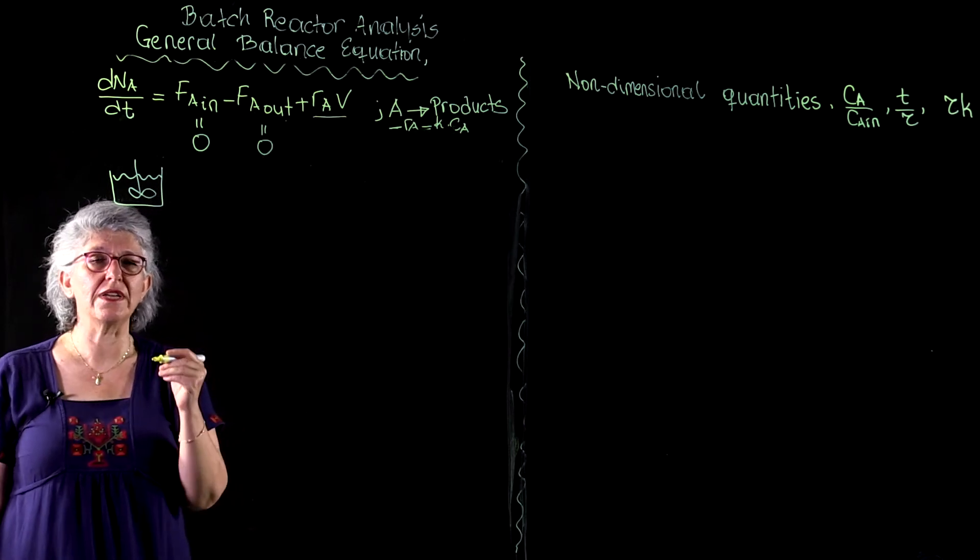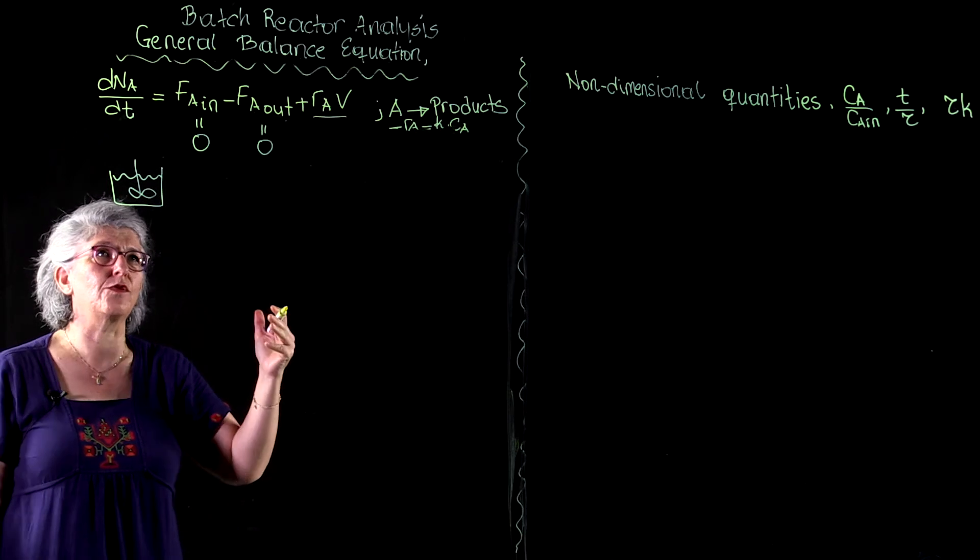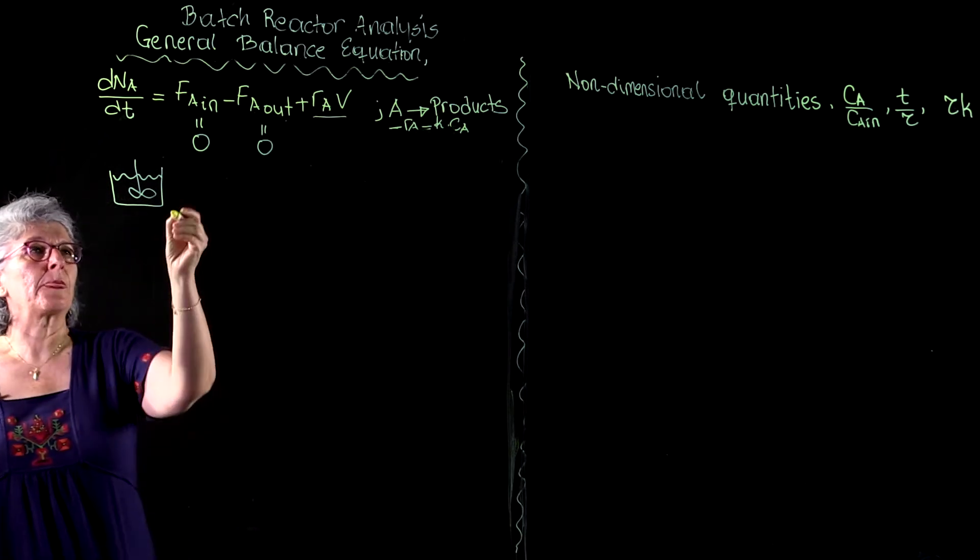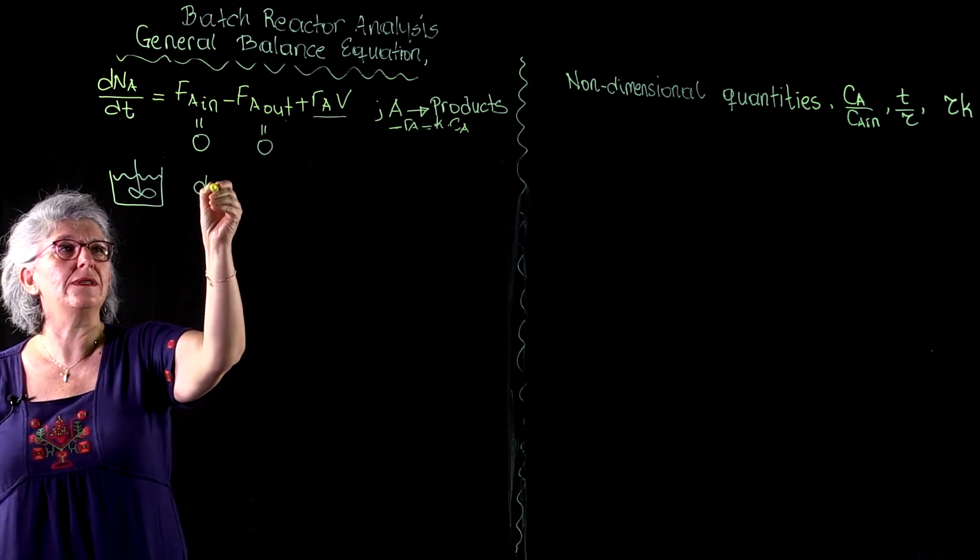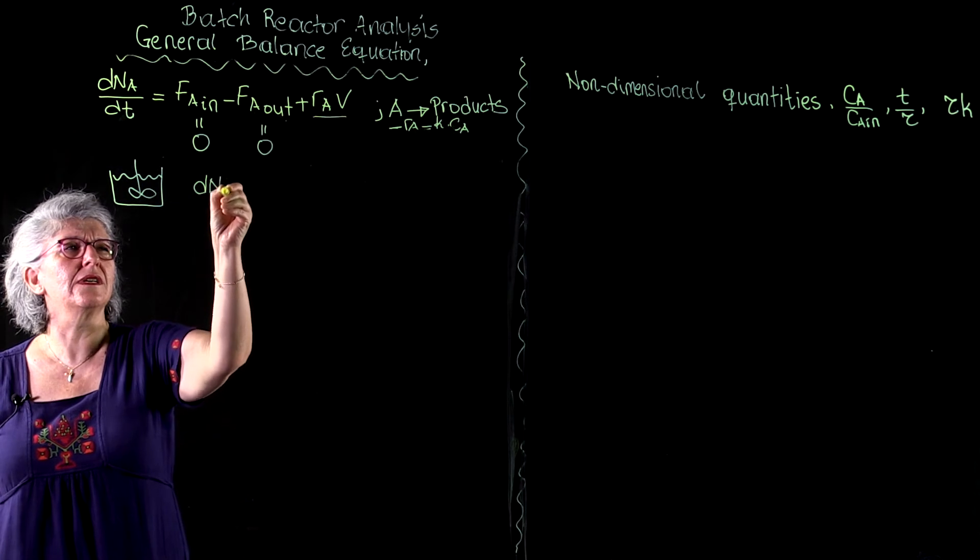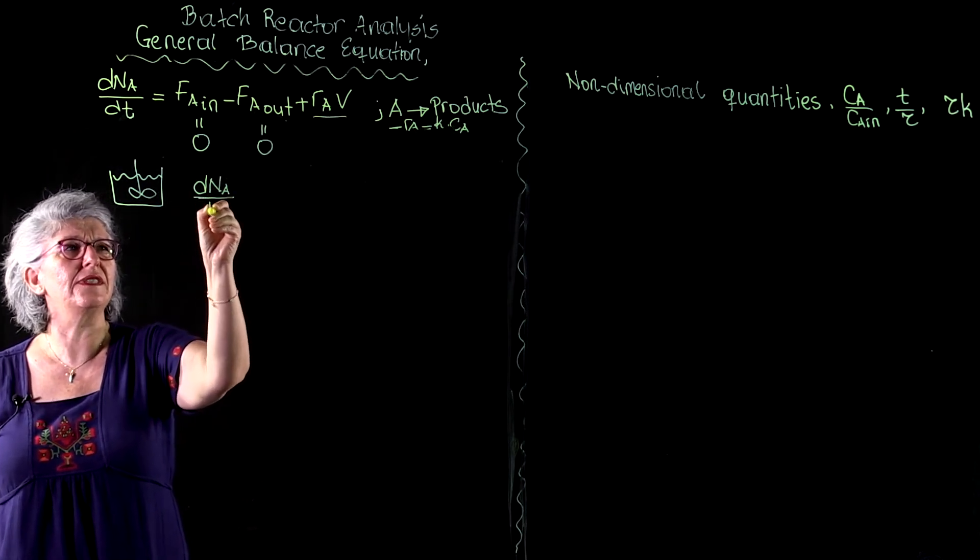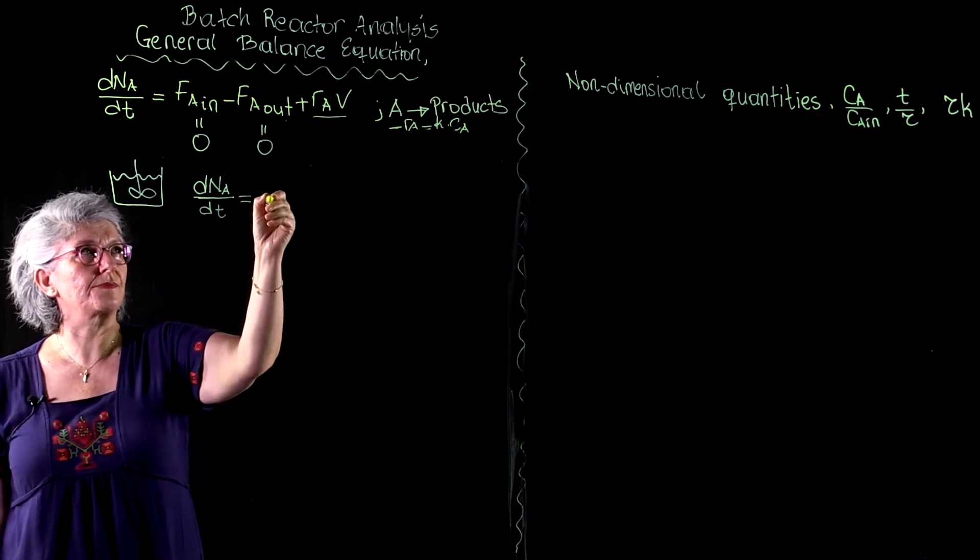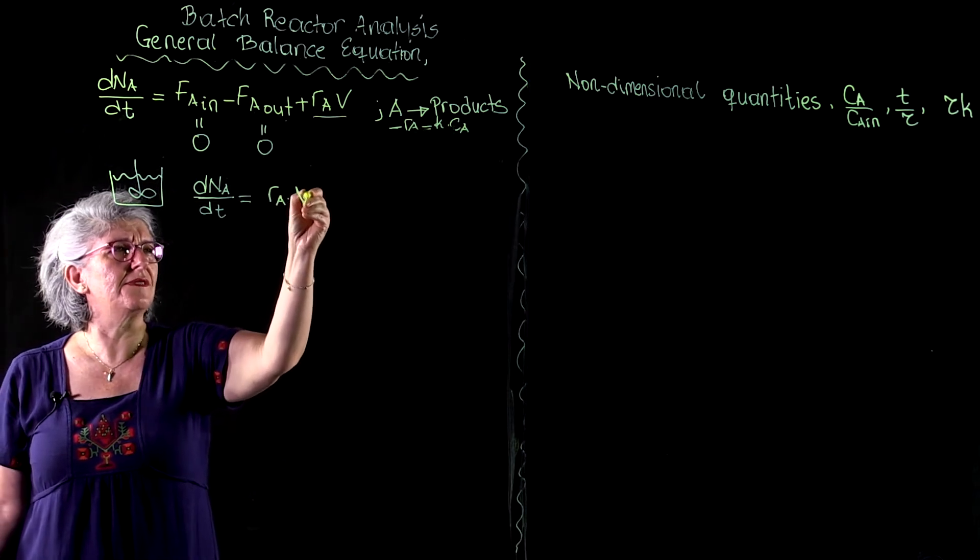So we charge our reactants, and we let the system evolve to the final product and we take out our products. And given that, our balance equation simplifies: dNa over dt equals Ra times V.